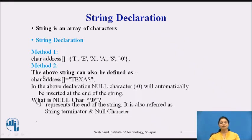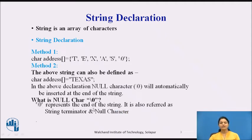In the second method, we have the same definition — character array — but instead of single quotes, we use double quotes for 'TEXAS'. The null character '\0' will be automatically inserted at the end of the string; there is no need to add it manually. The null character represents the end of the string, and is also referred to as a string terminator.